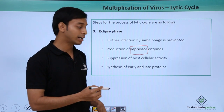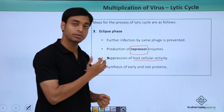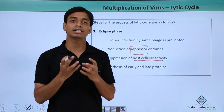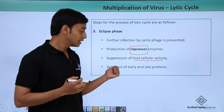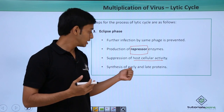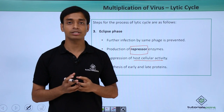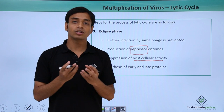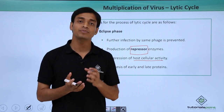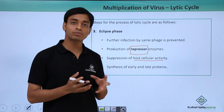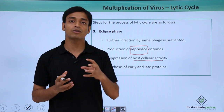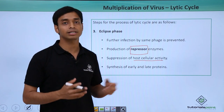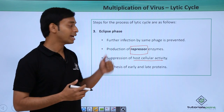During the eclipse phase, the host's basic cellular activities are suppressed because the virus wants to multiply itself. This leads to the synthesis of two types of proteins: early proteins and late proteins. Early proteins are new enzymes that seal the hole inside the host cell organism. Late proteins are those that help in the formation of capsules and the assembling of the virus particle.